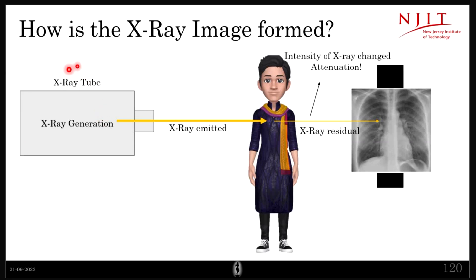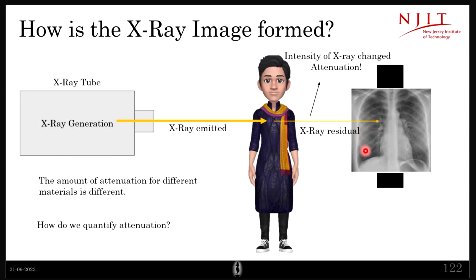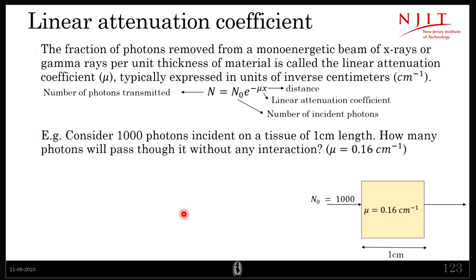We saw X-ray generation and how it interacts with cells in the body. The X-ray emitting here undergoes some attenuation. This attenuation is responsible for the image — more attenuation results in a dark spot, and less attenuation results in a bright spot. So how do we quantify attenuation?